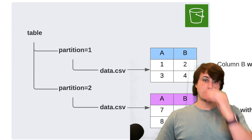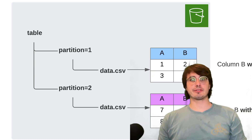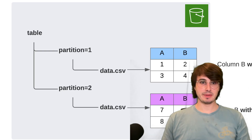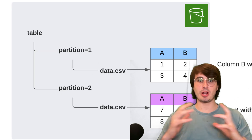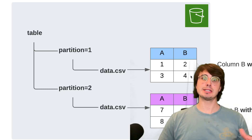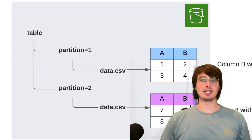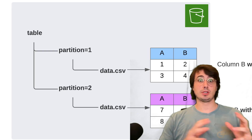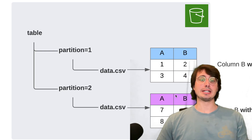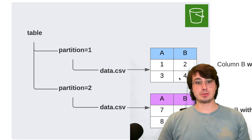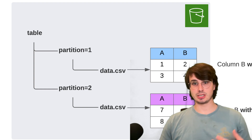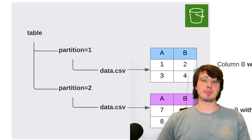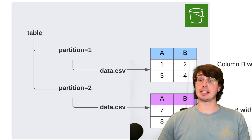Next, you want to think about using dynamic frames. Glue introduced dynamic frames as an abstraction over data frames that allows you to have partitions within a data frame, split them automatically, and handle more semi-structured and evolving schemas. It's really useful for ingesting nested JSON or inconsistent data where you might need to automatically divide or split up the data, or just eliminate inconsistent data dynamically. You can also convert these to Spark data frames if you want to use Spark functions or third-party libraries.